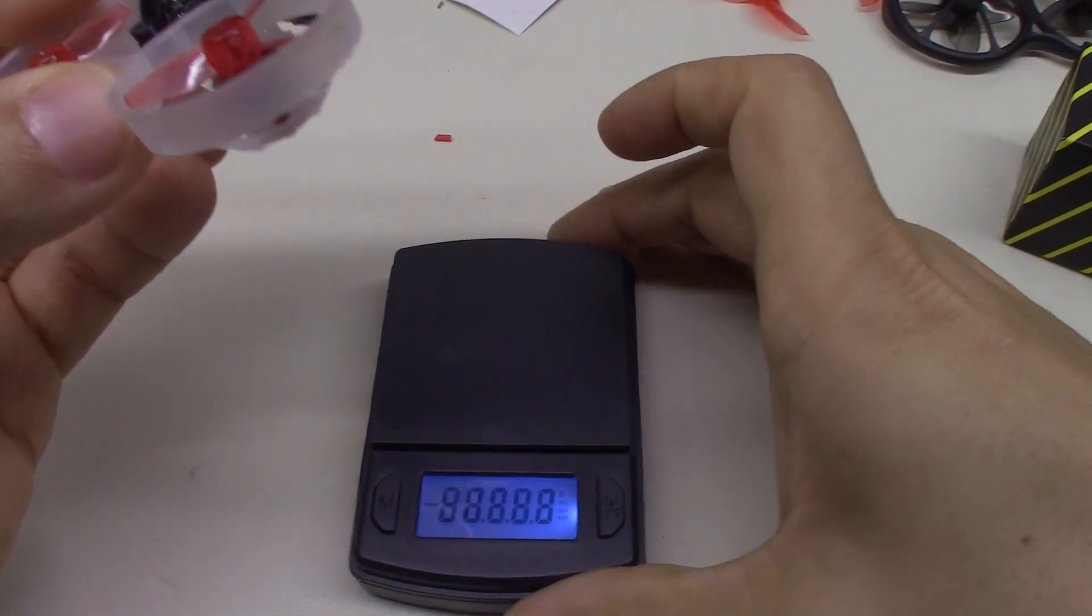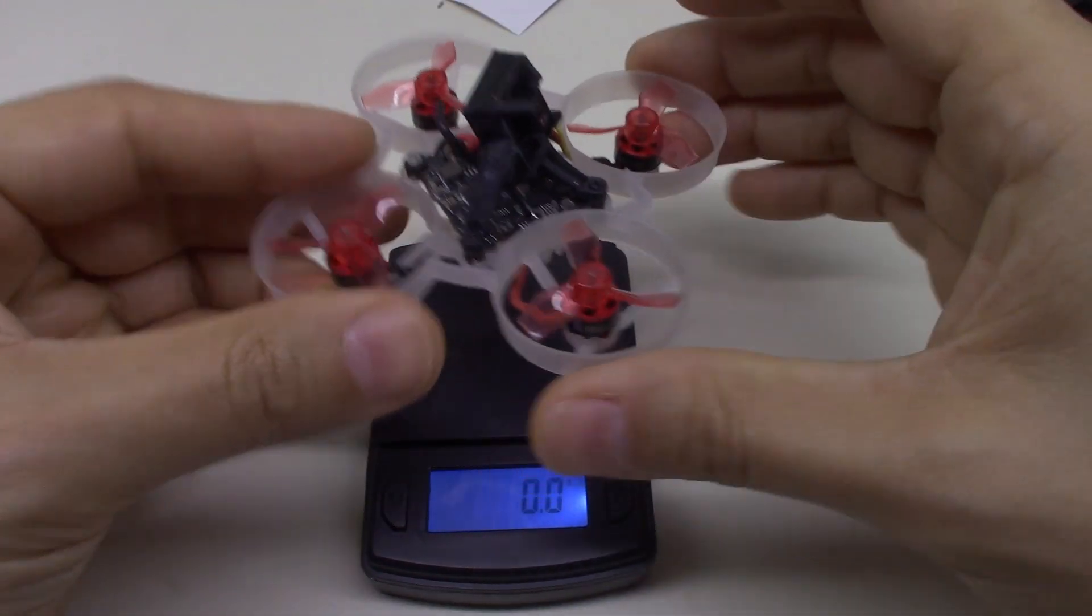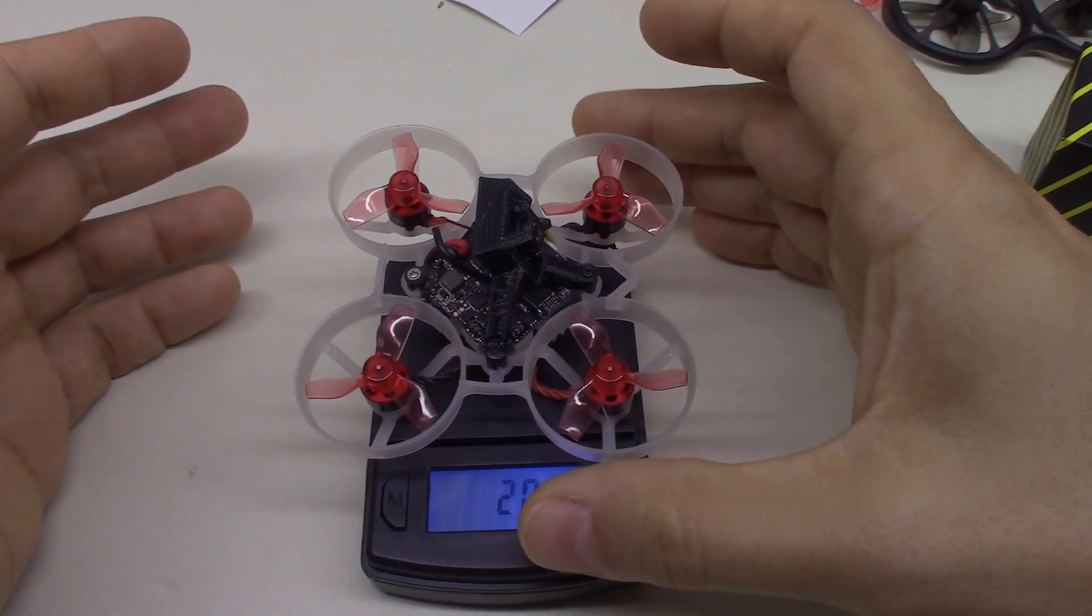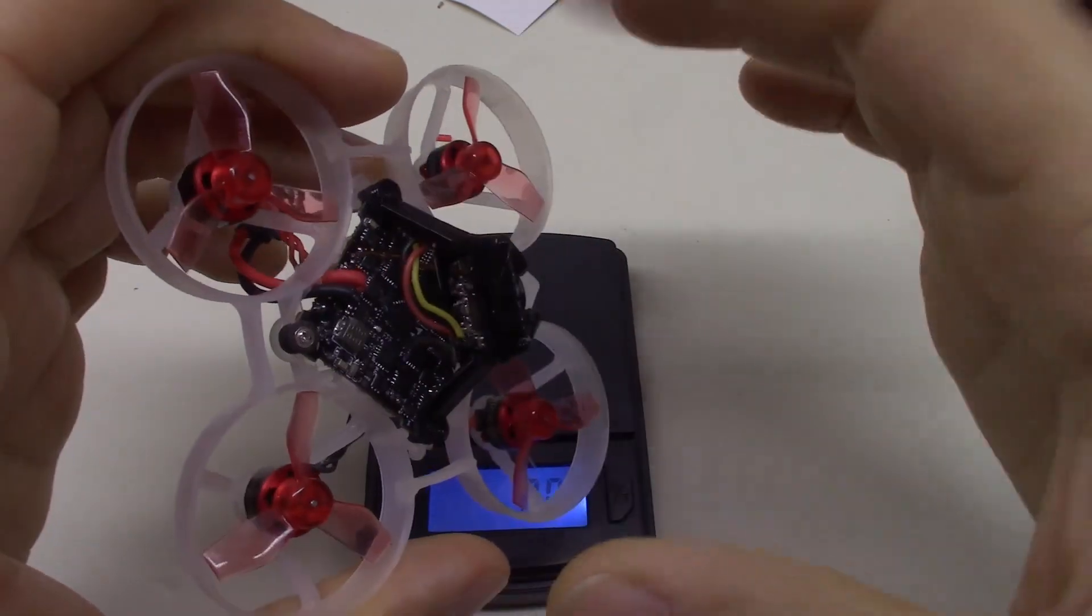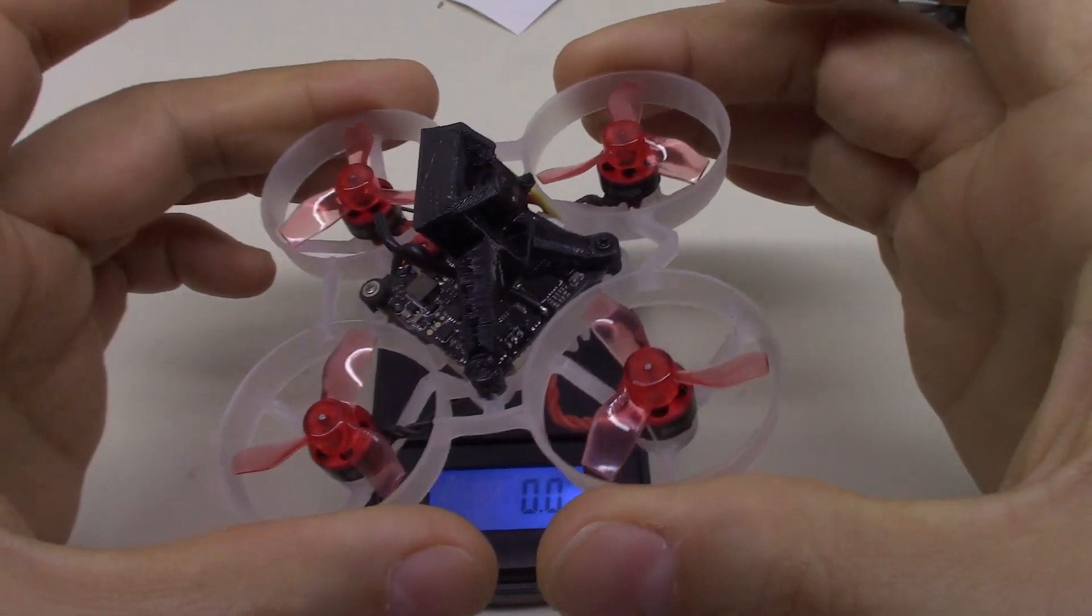So let's go ahead and weigh this with the setup as it is right now. I'm showing 20.6 grams. So what I'm going to do is get this off of here, clip these wires, solder the new camera on with the new canopy, and then we'll weigh it again.